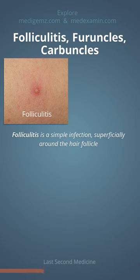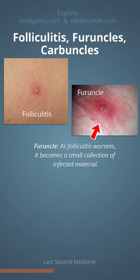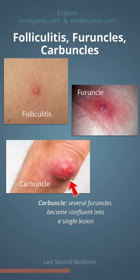Folliculitis is a simple infection superficially around the hair follicle. As folliculitis worsens, it becomes a small collection of infected material known as a furuncle. When several furuncles become confluent into a single lesion, it becomes known as a carbuncle — essentially a localized skin abscess that must be drained.